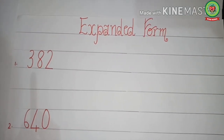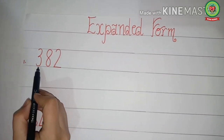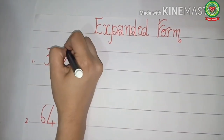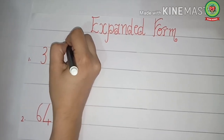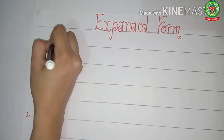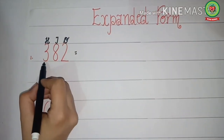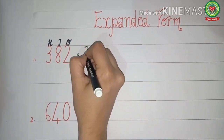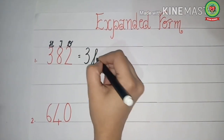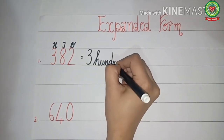Now we will do practice of expanded form of a three-digit number. The number is three hundred eighty-two. Before going to expand this number, first we will write down the place value chart — ones, tens, and hundreds. We can expand it in two ways. The first way: we write three, and what is written above three? Hundreds. Spell hundreds with me: H-U-N-D-R-E-D-S, hundreds.